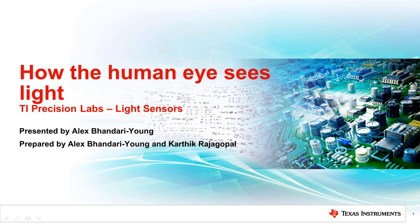We previously discussed how different types of light sources have different spectra. In this video, I will explain how the human eye sees different spectra of visible light and why this is an important consideration for light sensing.